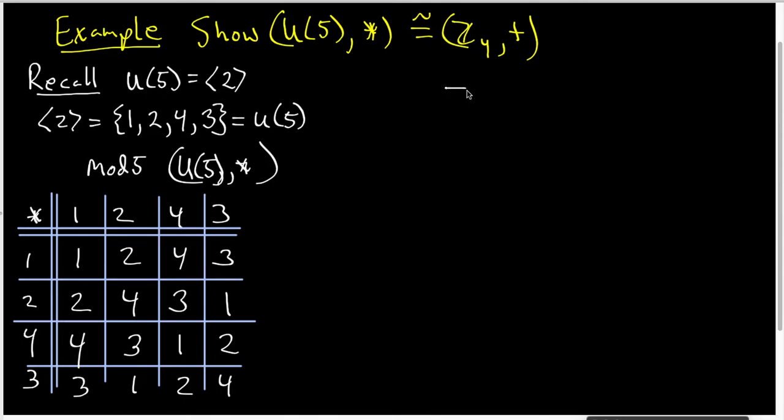Now what I want to do is look for the Cayley table for Z4 under its addition. I want to remember that this is the group generated by its 1 element, and the order that 1 generates this would be 0, 1, 2, and 3.